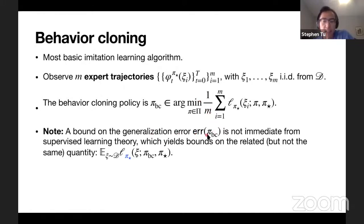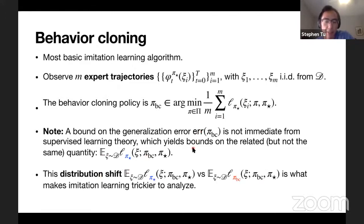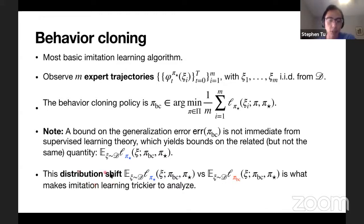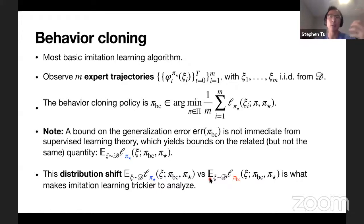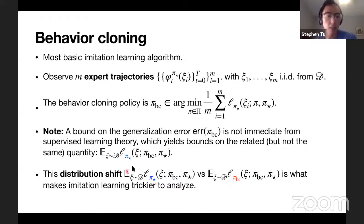Supervised learning gives bounds on the expected imitation loss where pi-star is the generating policy. But the generalization error we really care about uses the behavior clone policy to generate the distribution. What makes imitation learning tricky to analyze is this distribution shift between L_{pi*} and L_{pi_BC}: when I close the loop with my learned policy, I change the distribution of trajectories. Any error introduces distribution shift, and even small errors can compound. That's what makes imitation learning tricky.